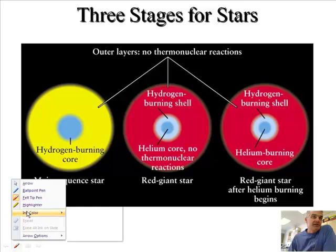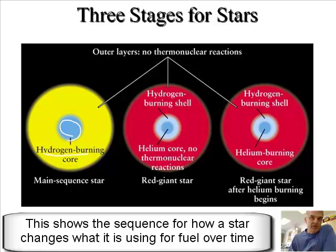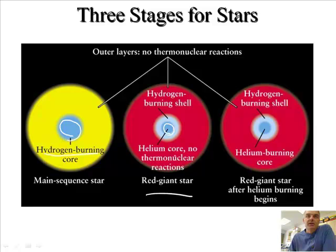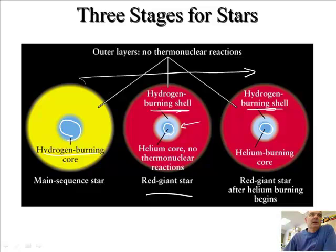Another way to look at this is to look inside of different stars. For a main-sequence star, in the center you're going to do hydrogen burning or proton-proton burning. For a red giant star, you're going to have helium burning in the center, or helium core, but no thermonuclear reactions, and you're going to have this shell on the outside burning. If you get a red giant after the helium burning begins, the helium will start to burn in the center, and you still have the hydrogen burning shell. They're like stages for a star.